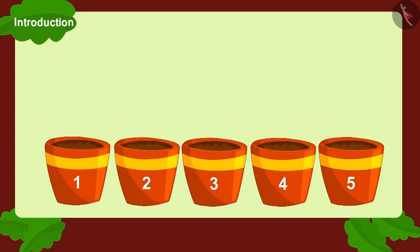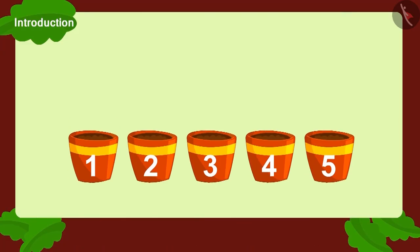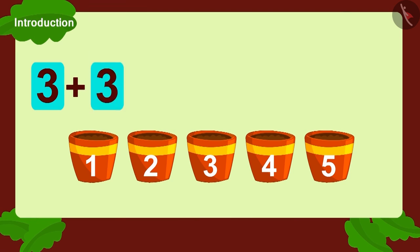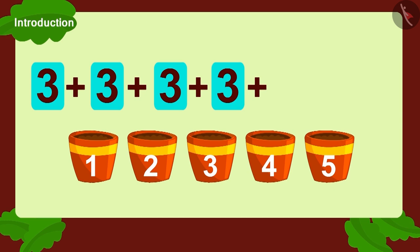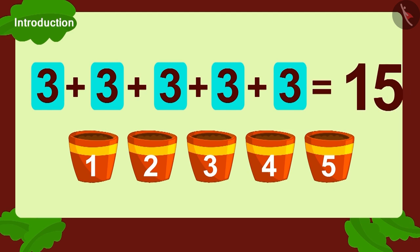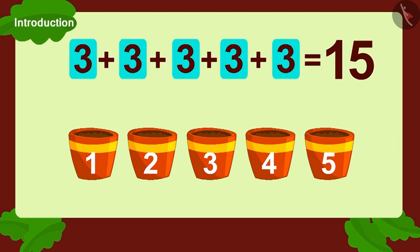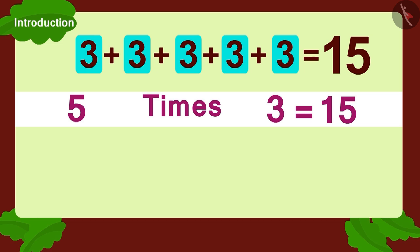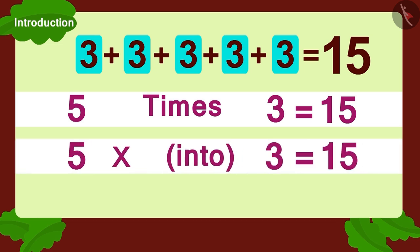Children, if Babban had planted three seeds each in five pots, then can you write this using multiplication? We can write it as three plus three plus three plus three plus three equals fifteen. Or five multiplied by three, or five multiplied with three. We can write it like this.